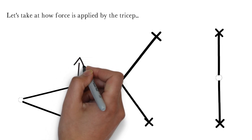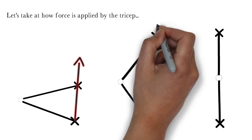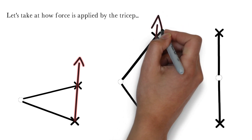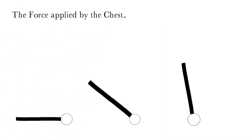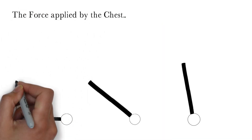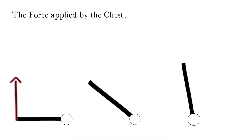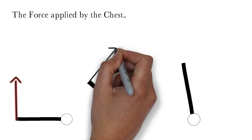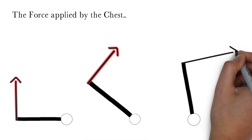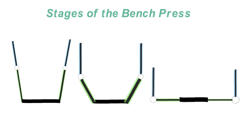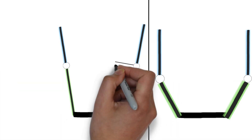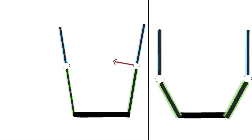The direction of force travels through the shoulder and through the wrist, because it's a jointed system. The force applied by the chest is always perpendicular to the humerus bone. We're looking at the stages of the bench press, and what I'm going to do is fill in the vectors for each muscle at each stage of the lift.